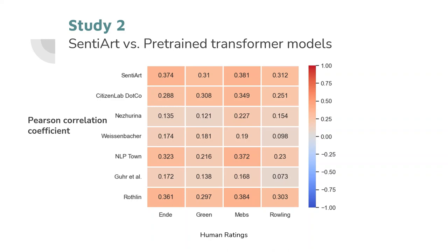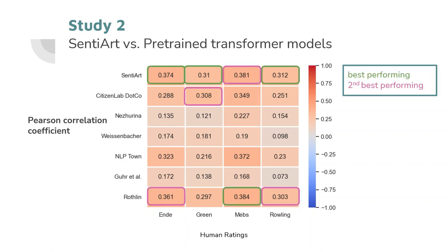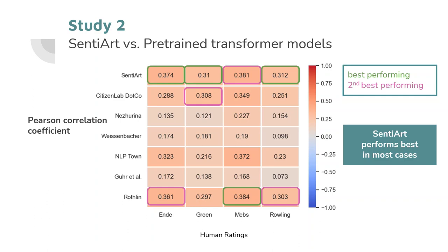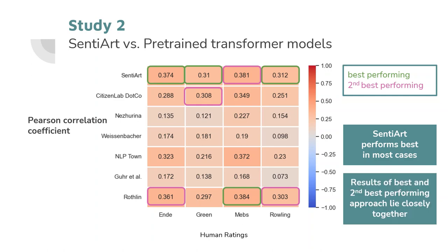This color-coded table shows the results of this comparison. It reports the Pearson correlation coefficient between the human ratings for each book and the sentiment scores determined by SentiArt or the six transformer models. The color coding from red to blue indicates the strength and nature of the correlation. For all instances, we can see slight or moderate positive correlations — there are no negative correlations. If we highlight the strongest and second strongest correlations for each book, we notice that for three out of four books, SentiArt exhibits the strongest correlation with human ratings, meaning the dictionary-based approach performed best. The results for the best and second best lie very closely together, indicating only marginal differences between the approaches.